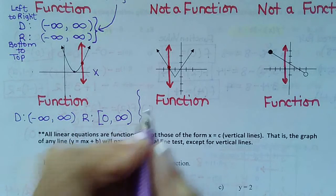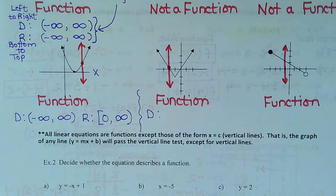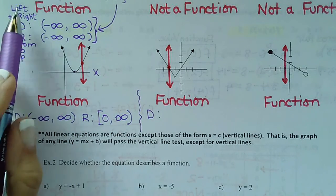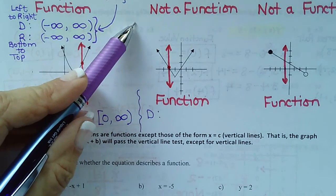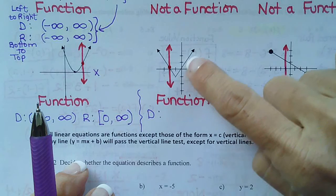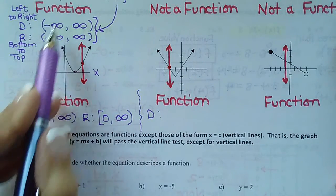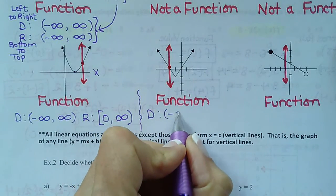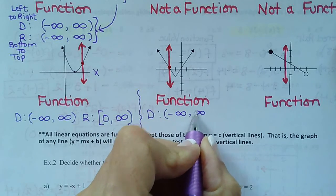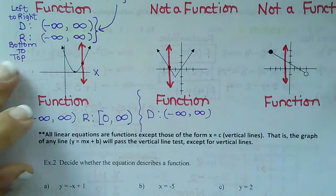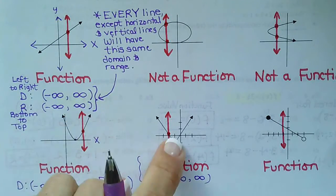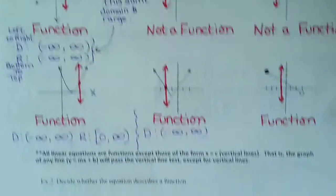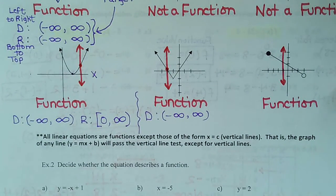Next we have the domain of the V shape. Remember, domain is left to right. Does this graph go left forever? Yes — see the arrow. Does it go right forever? Yes. So just like the first two graphs, this has a domain of negative infinity to positive infinity. Notice what all three graphs have in common: arrows pointing left forever, arrows pointing right — and that's why all three have the same domain.